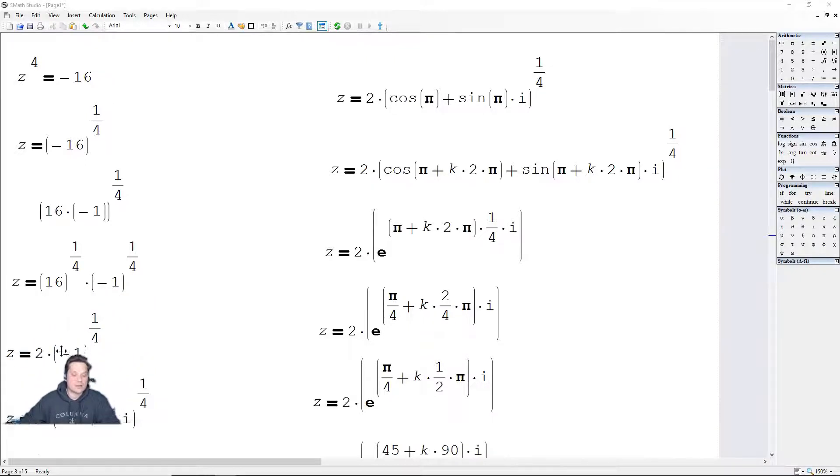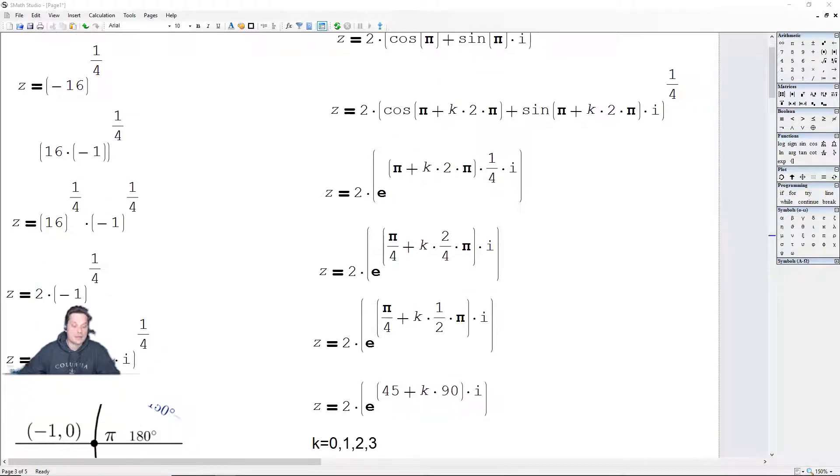Then 16 to the 1/4 is positive 2, so that's done. But that negative 1 to the 1/4 has the whole world unto itself. I'm going to rewrite that negative 1 specifically as negative 1 plus 0 times i to the 1/4, because that negative 1 plus 0 times i has the shape of a complex number.